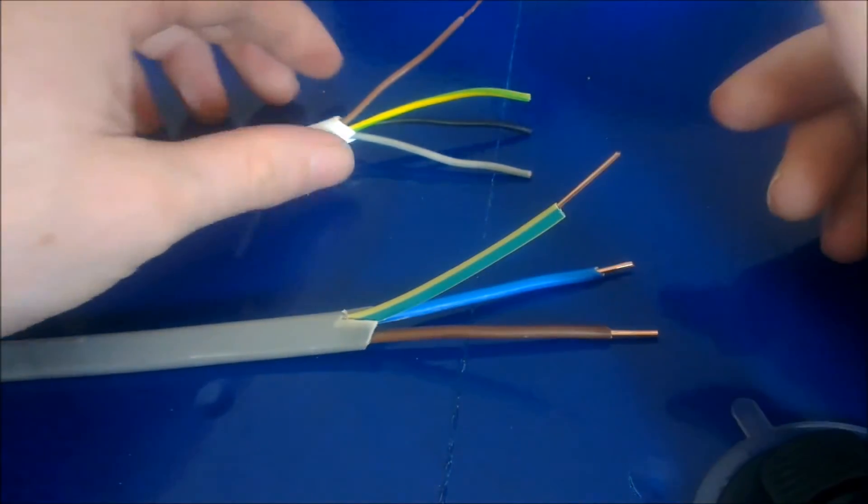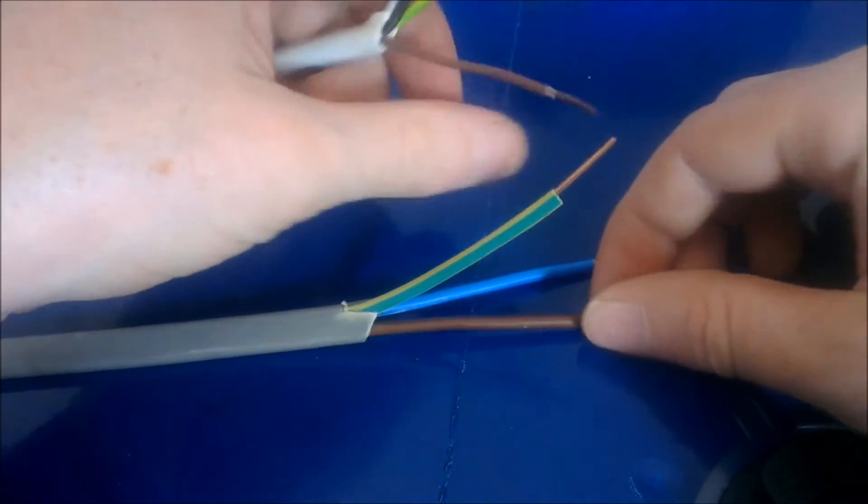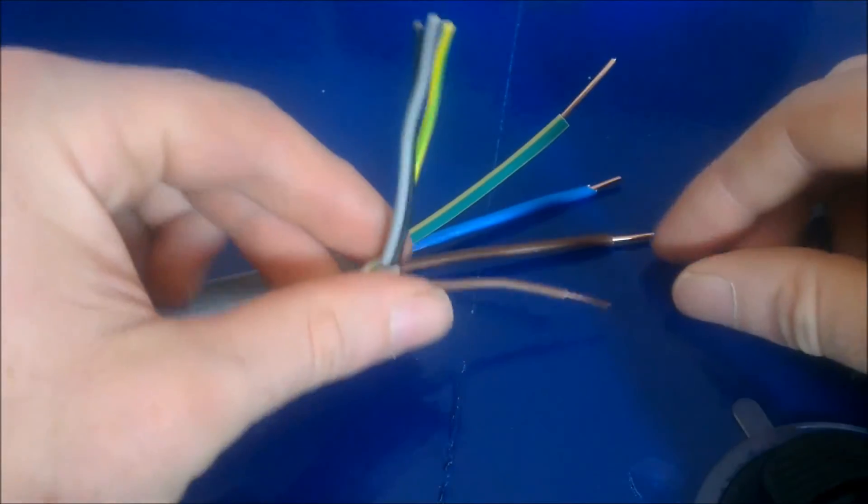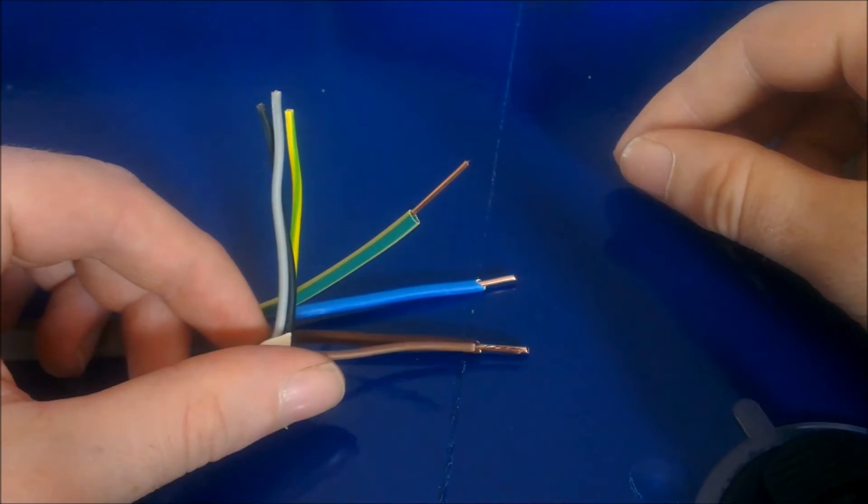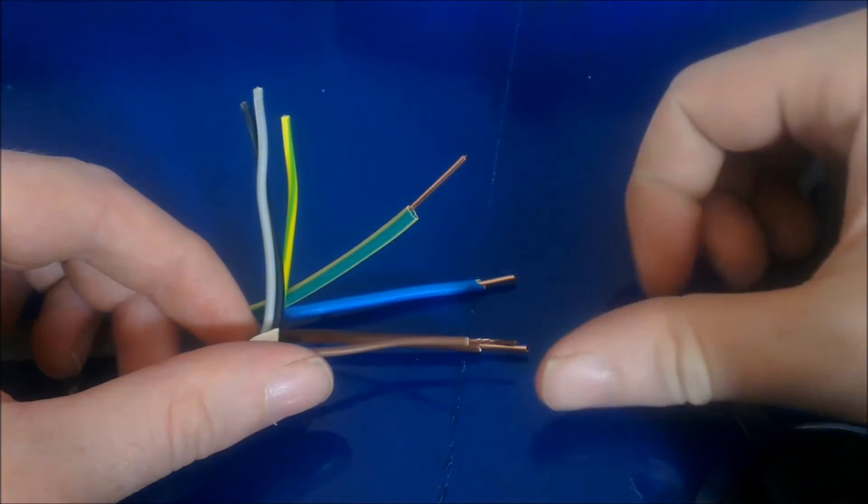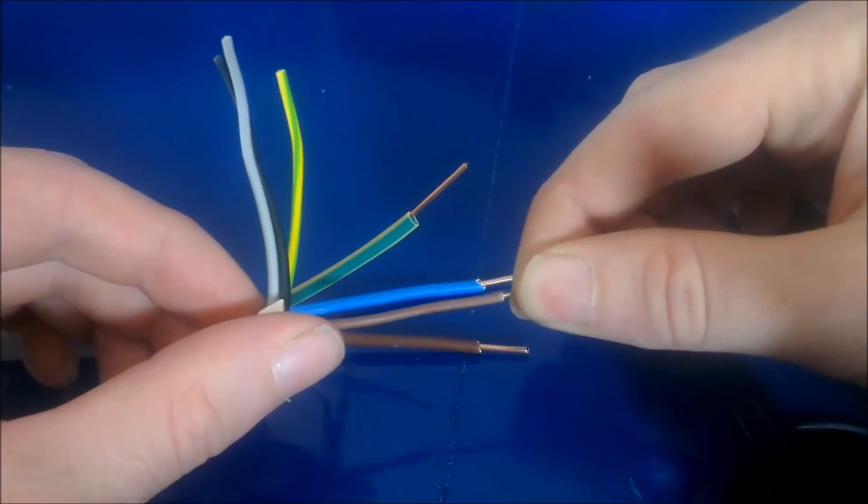So just for comparison, this is 0.75mm cable, so you can see the difference in size. It was hard to see on the camera, but you can see there is a difference. That is 2.5mm in diameter and this is 0.75mm diameter.